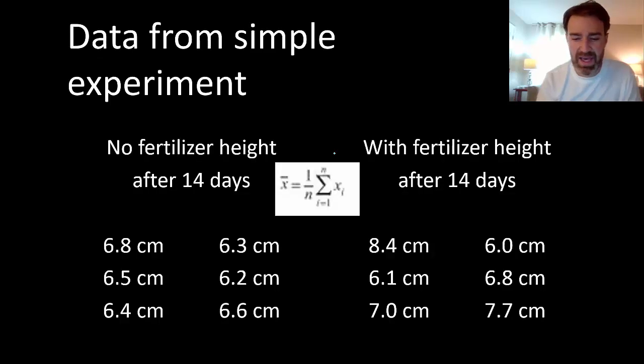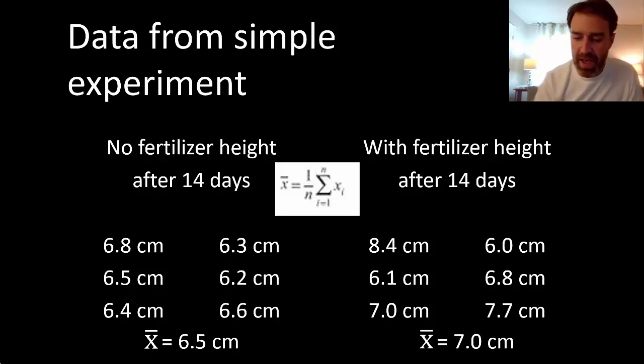Let's take a look at our sample data again. One of the simplest measures to look at a sample set of data is just the mean. This looks like a really complicated formula, but just take each data point x sub i, add them together with sigma notation, take that sum and divide it by the sample size. In this case, just add up all your data points and divide by six because there's six samples here. That gives you a mean of 6.5 for the no fertilizer group and a mean of 7.0 for the fertilizer group.